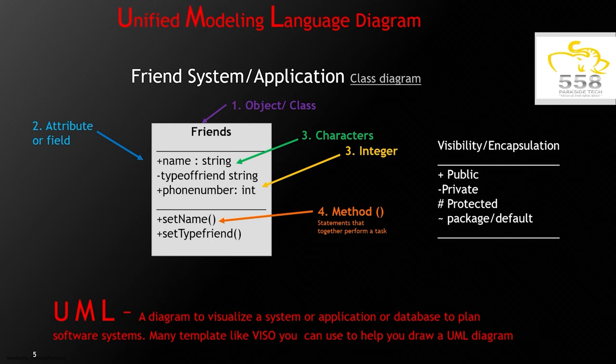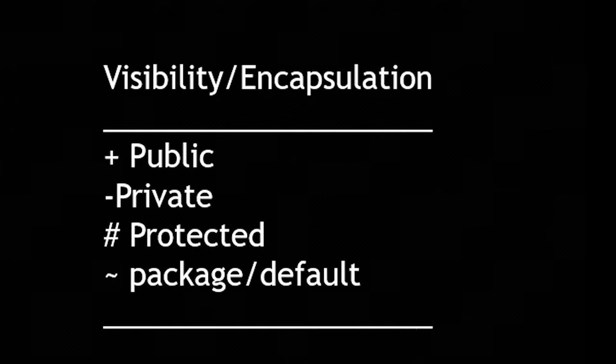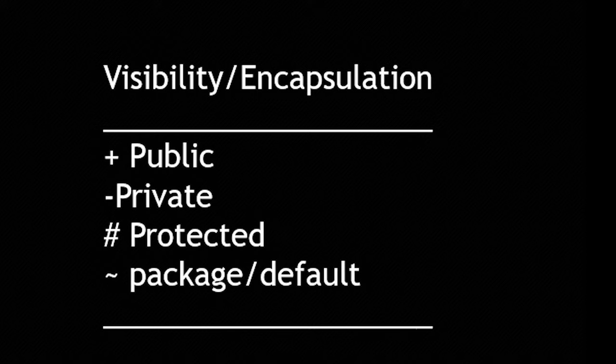Here is an example of how to create an object while using a class diagram under UML. And you can see there are some symbols that apply. We call them visibility or encapsulation. Plus is for public, minus is private, pound sign is protected, and a tilde is a package.